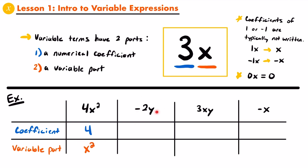Moving on to negative 2y, the coefficient would be negative 2 — you want to include the negative with that coefficient. So negative 2 is the coefficient of the variable term, which then means that the variable part is y. That makes sense because y is the letter in that term.